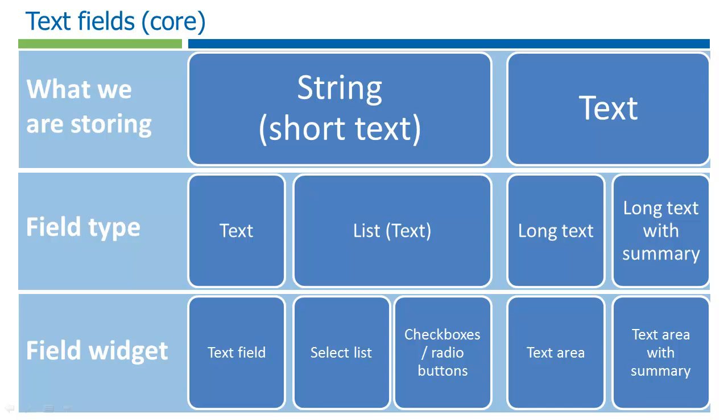The first category of fields is text. Text fields are very open and can store virtually anything you can type into your web browser. There are four types of these fields: Text, list of subtype text, long text, and long text with summary. The first two are great for shorter snippets of content. The latter types can store very large amounts of copy.